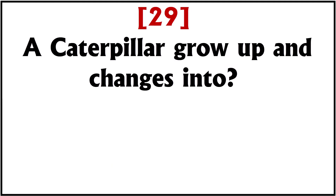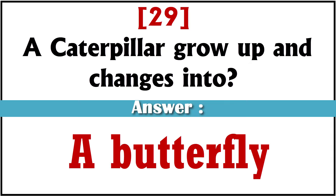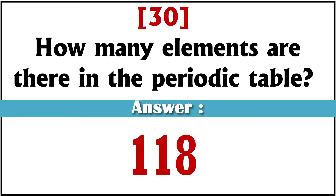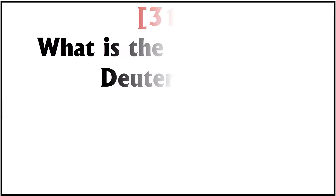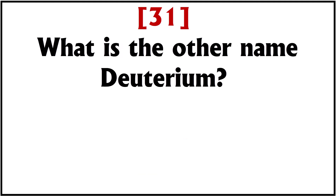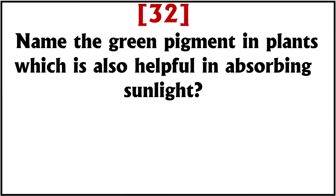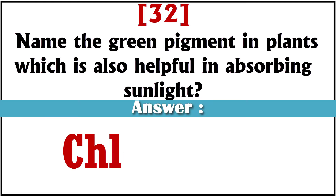A caterpillar grows up and changes into? Answer: A butterfly. How many elements are there in the periodic table? Answer: 118. What is the other name for deuterium? Answer: Heavy water. Name the green pigment in plants which is also helpful in absorbing sunlight. Answer: Chlorophyll.